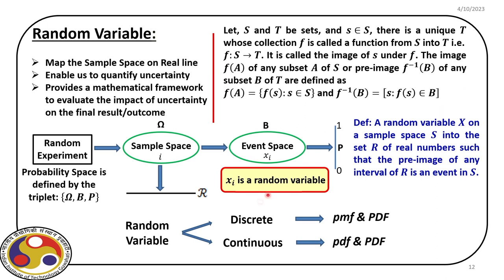Random variables can be of two types: discrete or continuous. For discrete random variables, we get a probability mass function and a probability distribution function. For continuous random variables, instead of a mass function we have a probability density function, and the cumulative sum gives the capital PDF or cumulative distribution function (CDF).